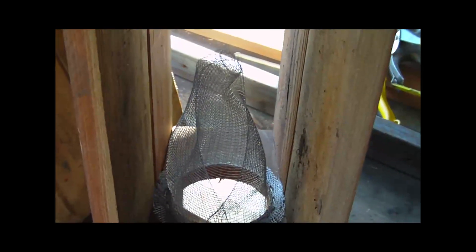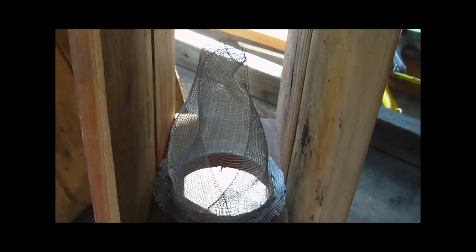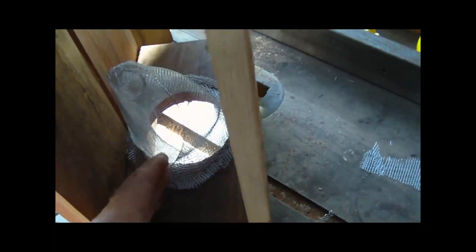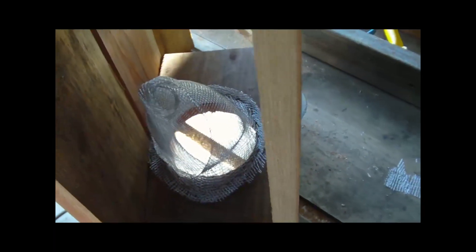What's going to happen here is the Yellow Jackets are going to land on the food below, and when they go to take off, they rise. They'll come up through that cone, and then they'll buzz around down below it and be trying to get out, and there's no way to get out. And so they get trapped.